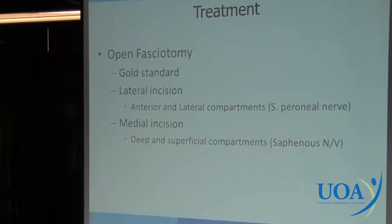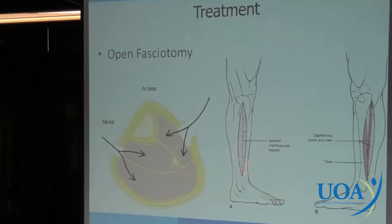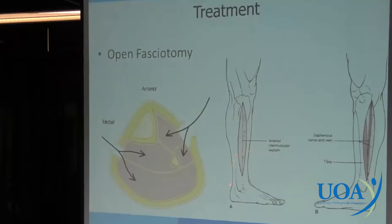Fasciotomy is still the gold standard. You're going to make two incisions depending on which compartments are involved. Your lateral incision will get you to the anterior and lateral compartments — you have to be careful with the superficial peroneal nerve there. The medial incision gets you to the deep posterior and the superficial posterior, and the saphenous nerve and vein are in that surgical field. For the sports-related exertional compartment syndrome, you just make a little incision towards the bottom of the ankle and slide your scissors up, releasing that tight fascial tissue that encases the muscles — allowing them more room to swell so their symptoms go away.